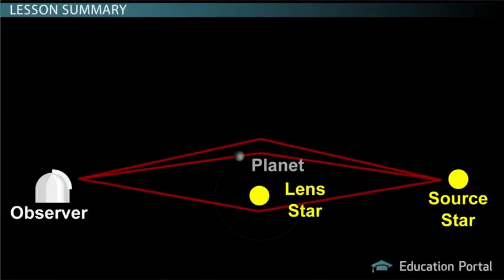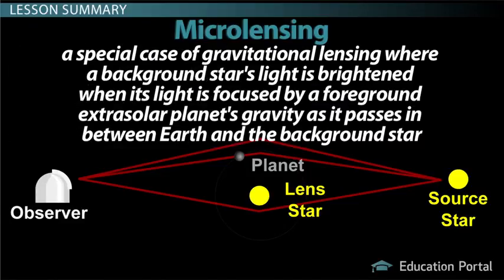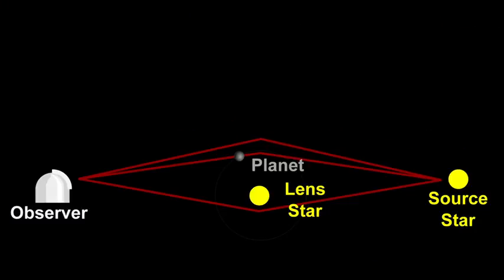Microlensing is a special case of gravitational lensing where a background star's light is brightened when its light is focused by a foreground extrasolar planet's gravity as it passes in between Earth and the background star.